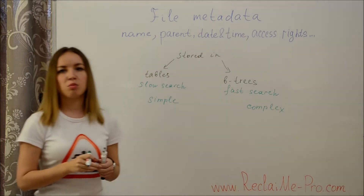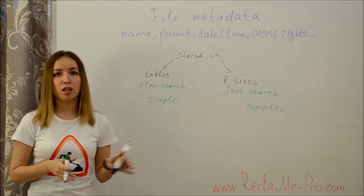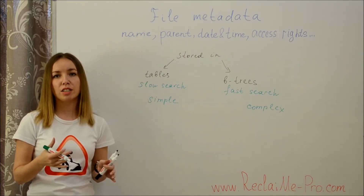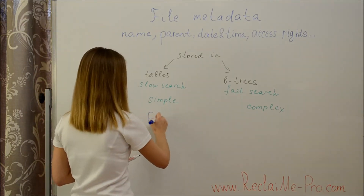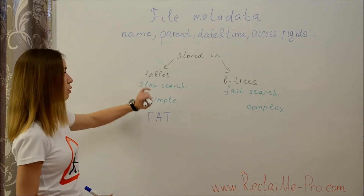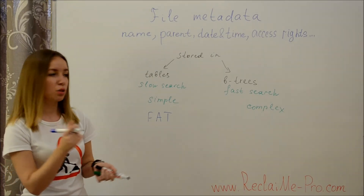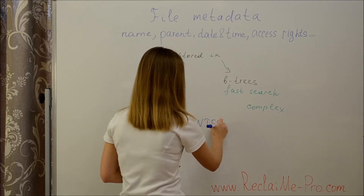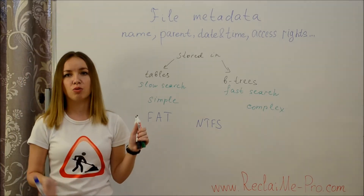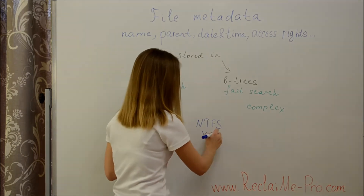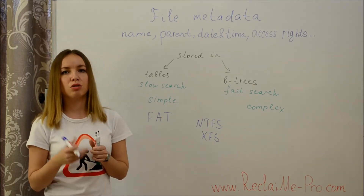Tables and B-trees can be used in different proportions. For example, FAT uses only tables and so does not work well with directories having a large number of files. NTFS uses tables for metadata and B-trees for directories to find files quickly. XFS uses small tables for metadata and B-trees to find the needed table.